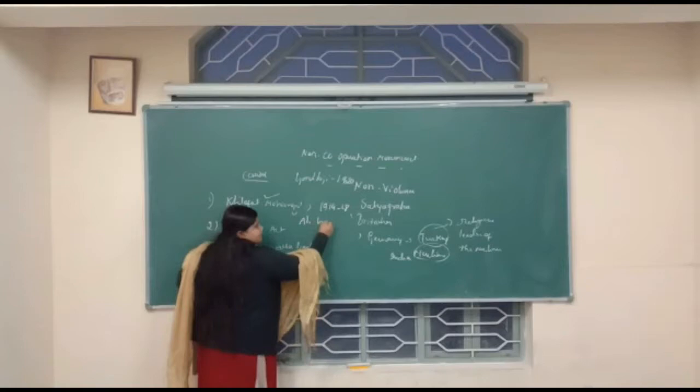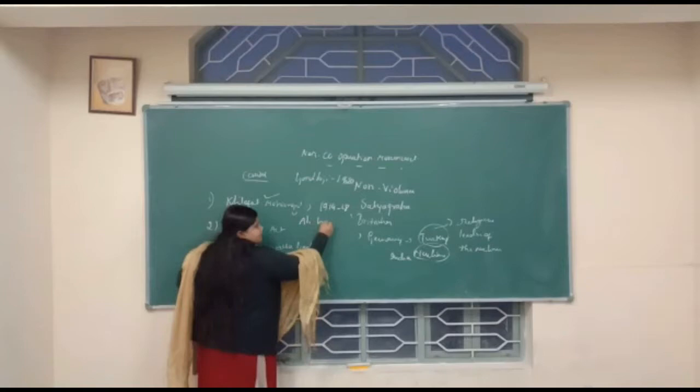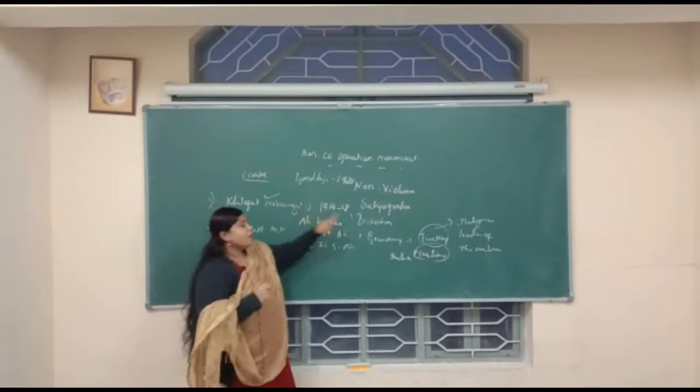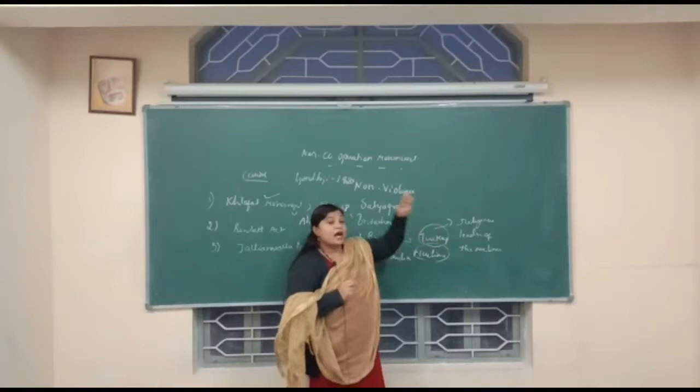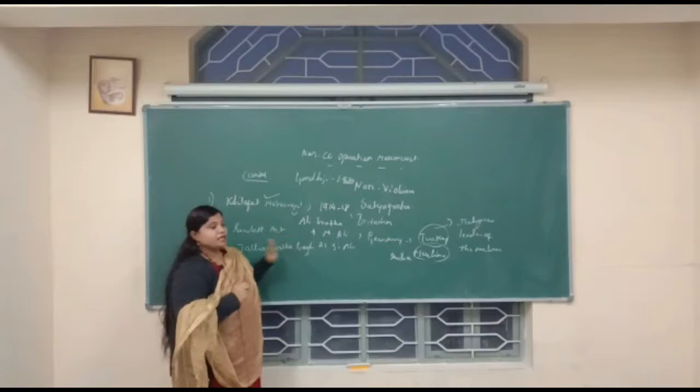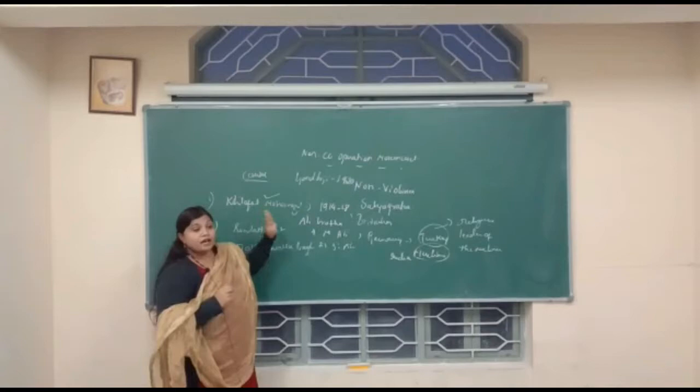The Khilafat Movement was launched by two brothers famously known as the Ali Brothers. The first one is Muhammad Ali and the second one is Shaukat Ali. These two brothers wanted to start this Khilafat Movement against the Britishers because the Britishers had imposed restrictions and wanted to lower the powers of the Turkey Sultan. They wanted to stop being loyal to the Britishers in India.